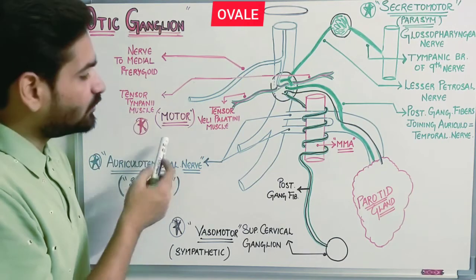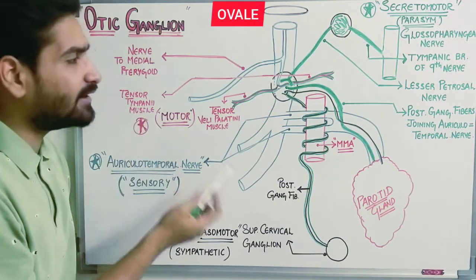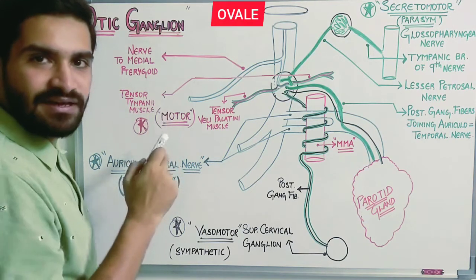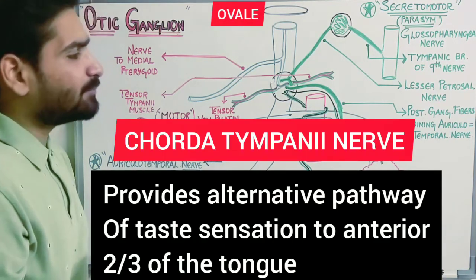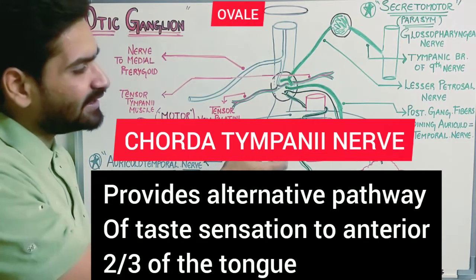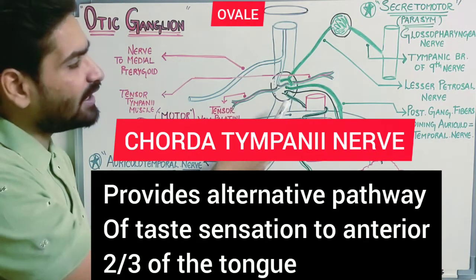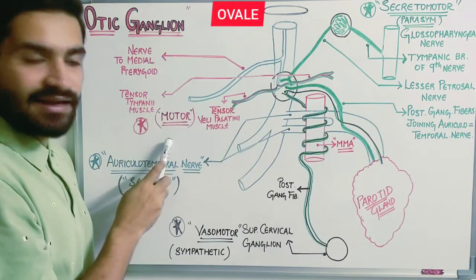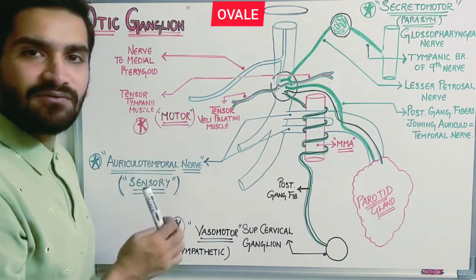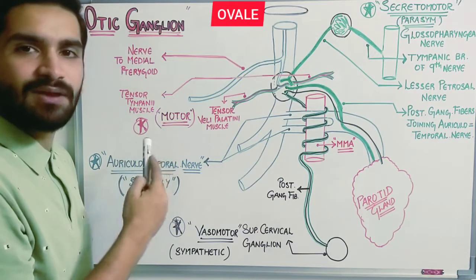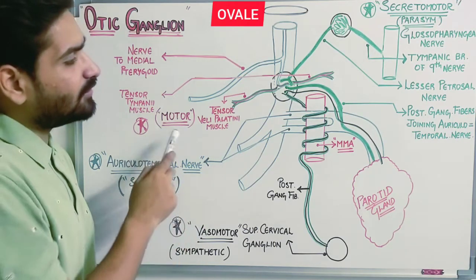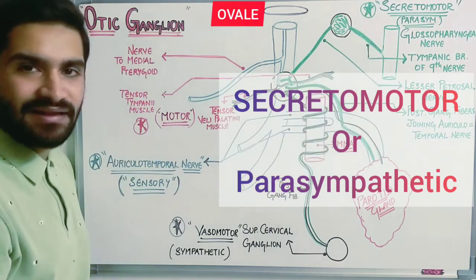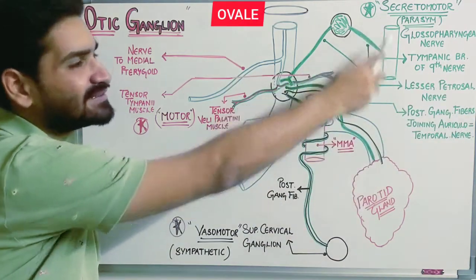This completes the motor supply of the parotid gland. Along with the nerve to medial pterygoid, there is one more nerve associated — the chorda tympani nerve. It also has connections with the mandibular nerve and the otic ganglion, so along with the nerve to medial pterygoid, the chorda tympani nerve is also considered in the motor supply of the otic ganglion.